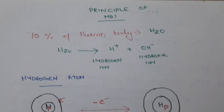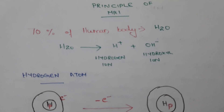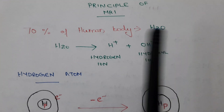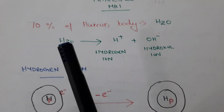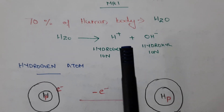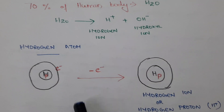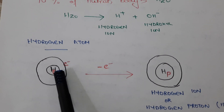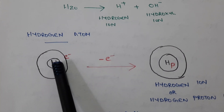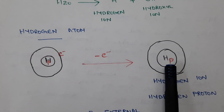MRI imaging is based on the behavior of protons under the influence of an external magnetic field. Seventy percent of the human body is composed of water molecules. When we decompose water we get hydrogen ion and hydroxyl ion. During MRI imaging we use the hydrogen ion or hydrogen proton. Hydrogen has one proton and one electron, and it will lose its electron to form the hydrogen ion.